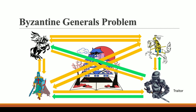In this case, the army generals go for the majority of the votes. Each general sees that two others are saying to attack and only one is saying not to attack, so they go with the majority. In the same way, they all conclude that the majority says attack — and they attack and win over Byzantine.